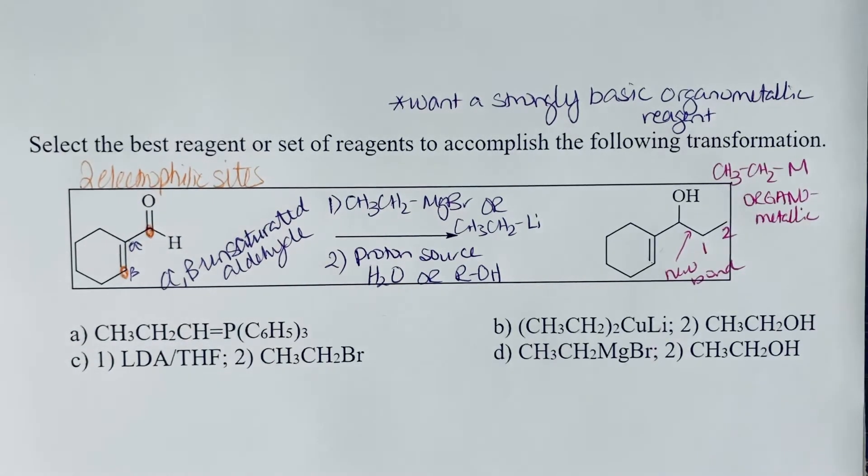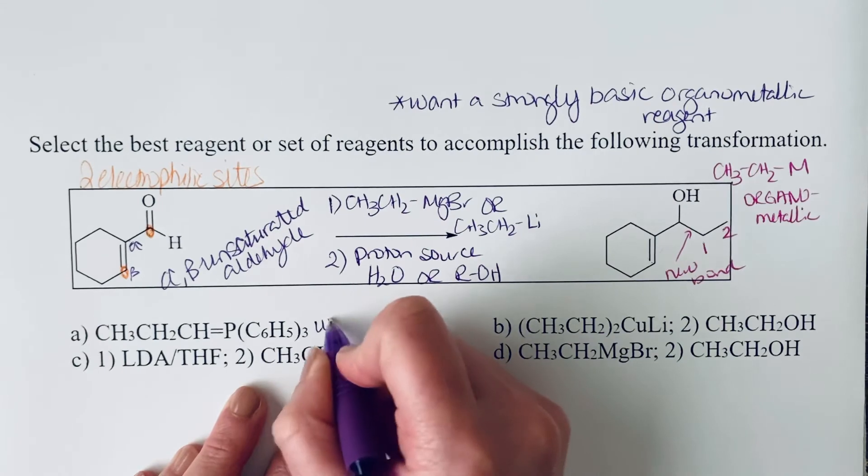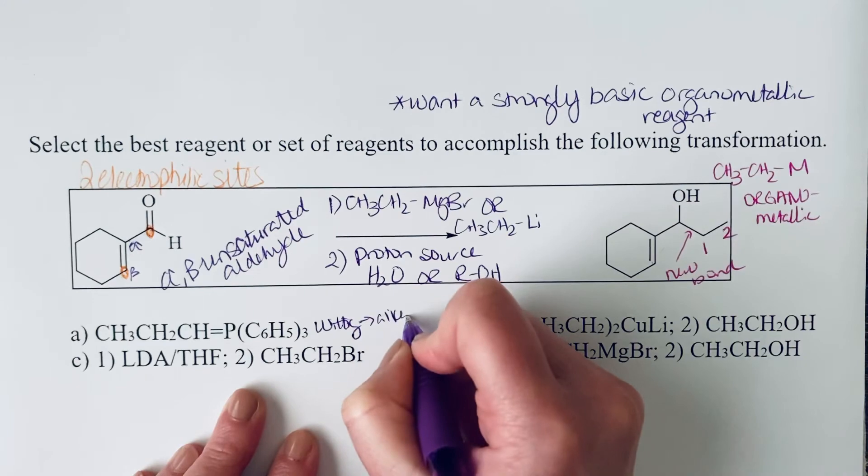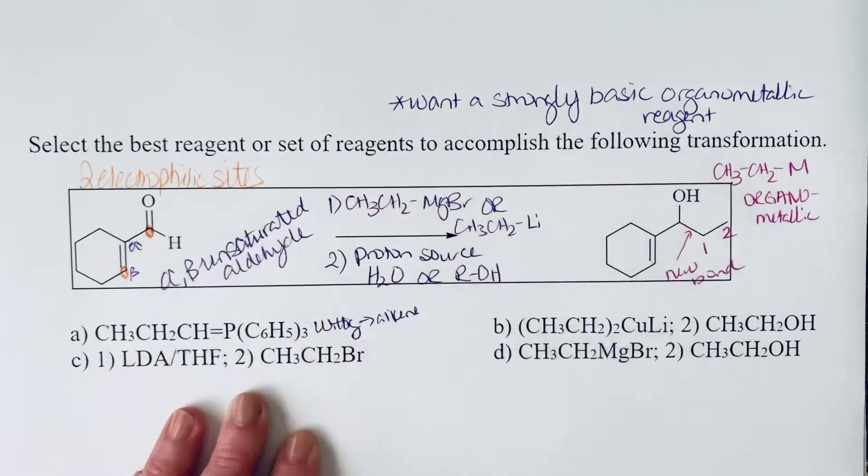So we want to look for our strong organometallic reagent. So in A, we see a Wittig reagent. So that's not what we're looking for. That would give us an alkyne. So that would add an alkyne to that carbonyl.